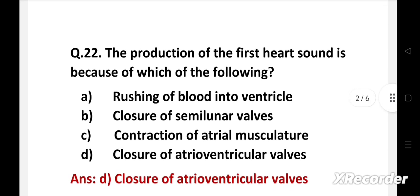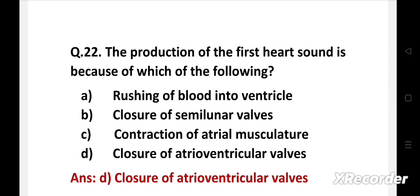Right answer is option D: closure of atrioventricular valves. First heart sound S1 is produced due to the closure of atrioventricular valves, that is tricuspid valve and bicuspid valve.